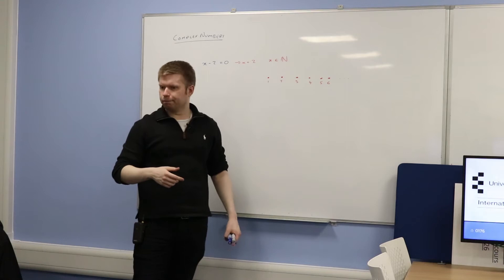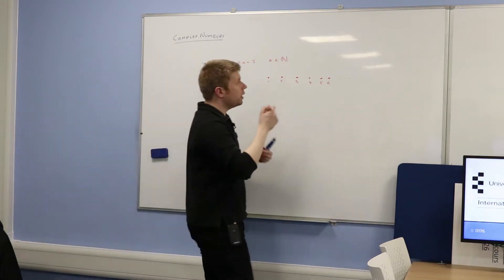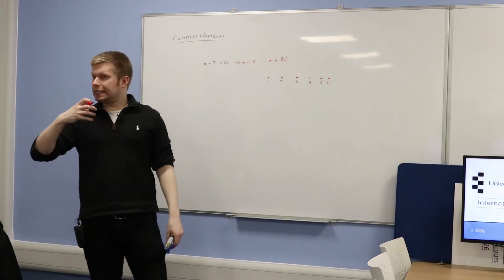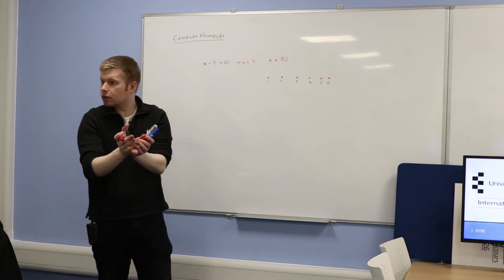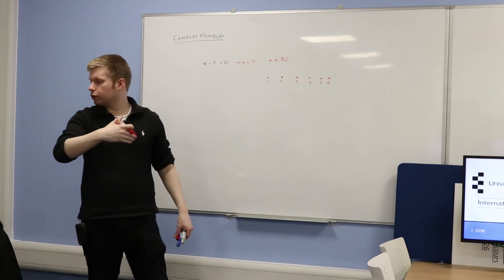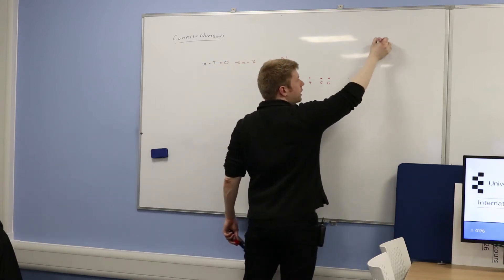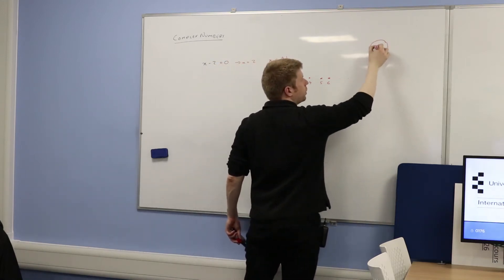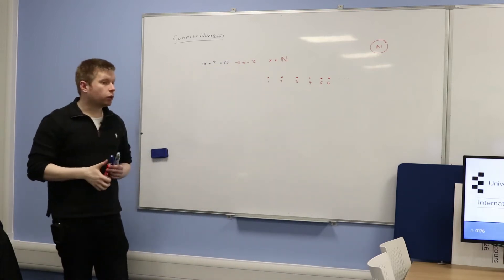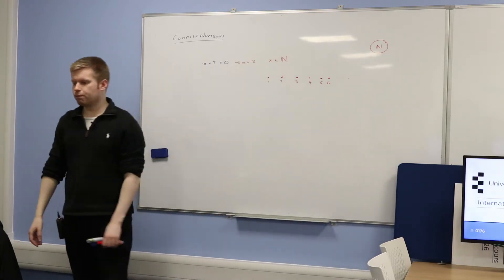Called natural because they're the ones that come naturally to us — they're the numbers that appear in nature. For example, three elephants running towards me. I'm talking about sets — a set is just a collection of objects. In this case, the collection is the positive whole integers: 1, 2, 3, 4, 5, 6, 7, 8, 9, etc. So I'm going to put these all in a circle — every single natural number in that circle.